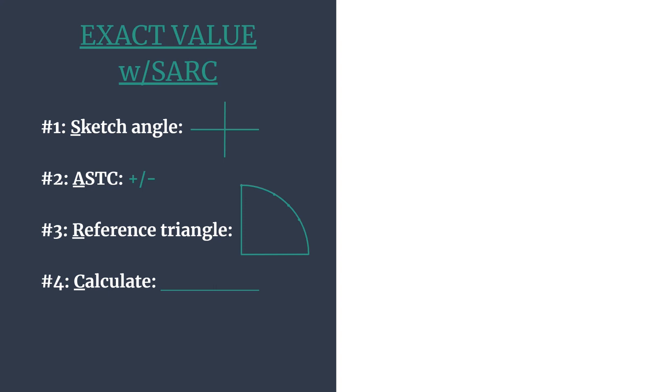So the S stands for sketching the angle, we'll sketch the terminal side. The A stands for ASTC so we can decide is our answer, our final answer, positive or negative depending on what quadrant our angle's in.